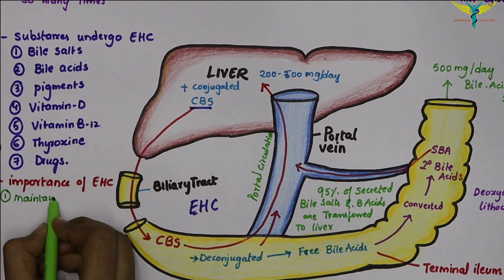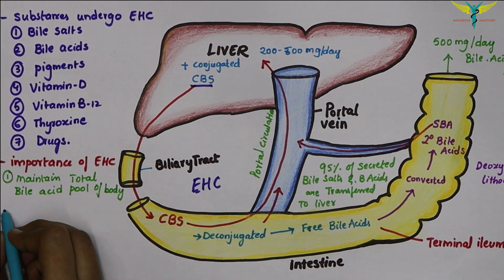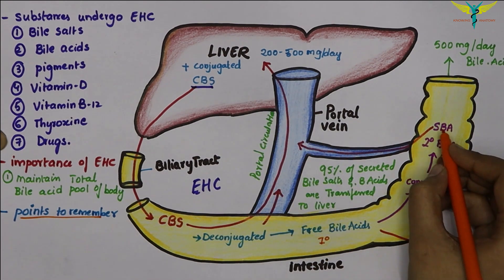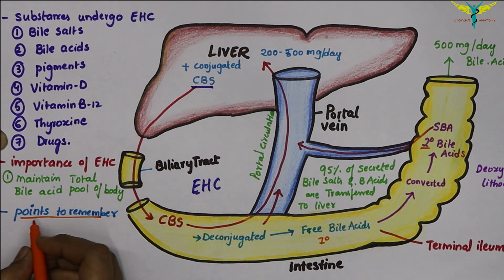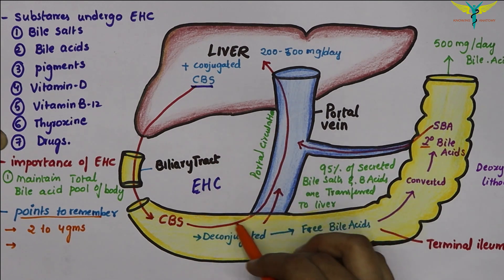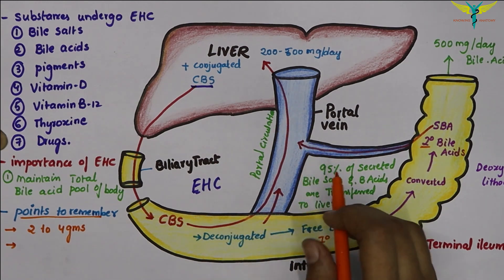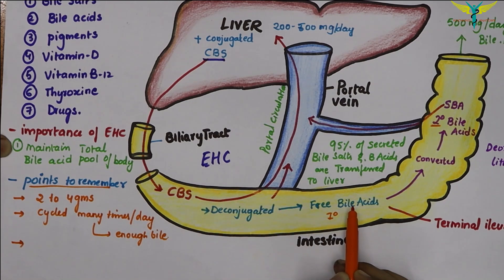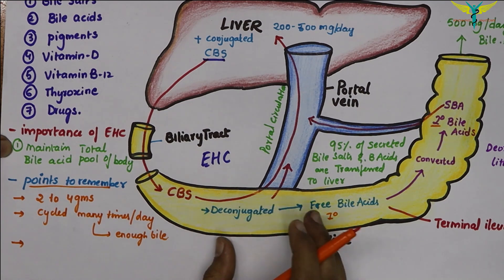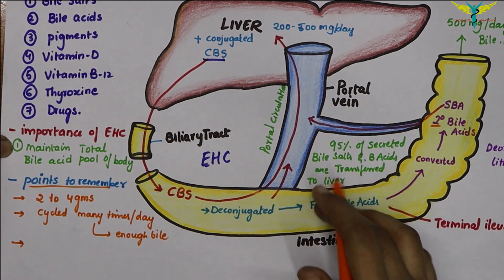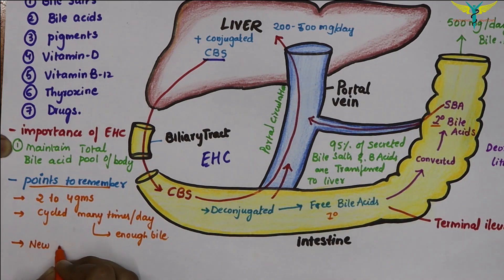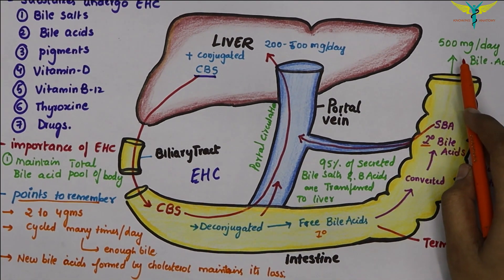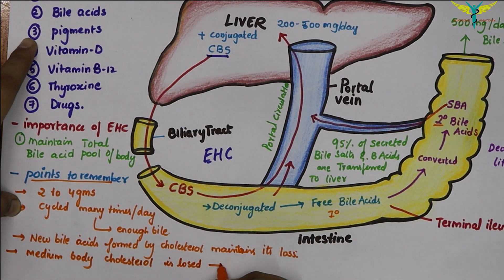The total amount of bile acids — conjugated, primary, or secondary — ranges from 2 to 4 grams. The bile acid pool cycles several times a day during meals so that a small pool of bile acids can efficiently provide enough bile. Though absorption occurs in the intestine, some amount is lost — about 500 mg of bile acid daily — which is replaced by synthesis of new bile acids from cholesterol. Fecal excretion of bile acids accounts for only the minimal loss of body cholesterol.